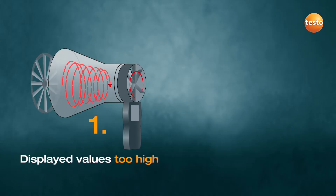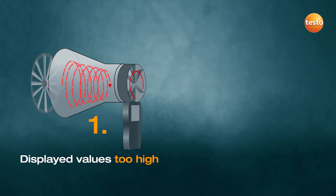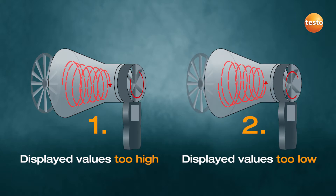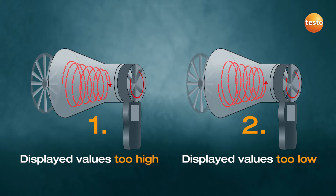Let's take a closer look at what happens. First: if the direction the swirl rotates is the same as that of the vane, the flow hits a larger cross-sectional area of the individual blades, making it accelerate too fast. Second: if the direction the swirl rotates is opposite to that of the vane, the flow passes between the individual blades and doesn't accelerate properly. The result is that an inadequate flow velocity is displayed.